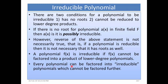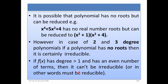Every polynomial can be factored into irreducible polynomials which cannot be factored further. This will be clear from the example of x^4 plus 5x^2 plus 4. We will see that it is possible for a polynomial to have no roots but still be reducible. This polynomial has no real number roots but can be reduced to (x^2 plus 1) and (x^2 plus 4).